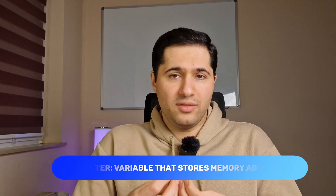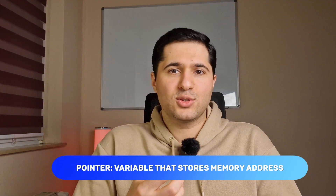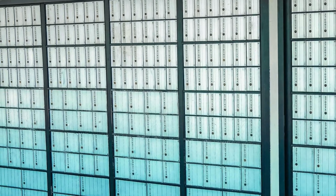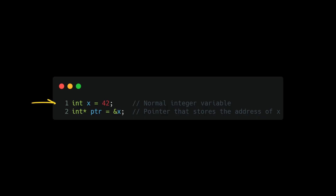At its core, in simple terms, pointers are variables that store a memory address instead of the actual value. Think of memory as a giant grid of mailboxes — each mailbox has an address and inside it holds a value. A pointer doesn't store the value, but rather the address of that mailbox.